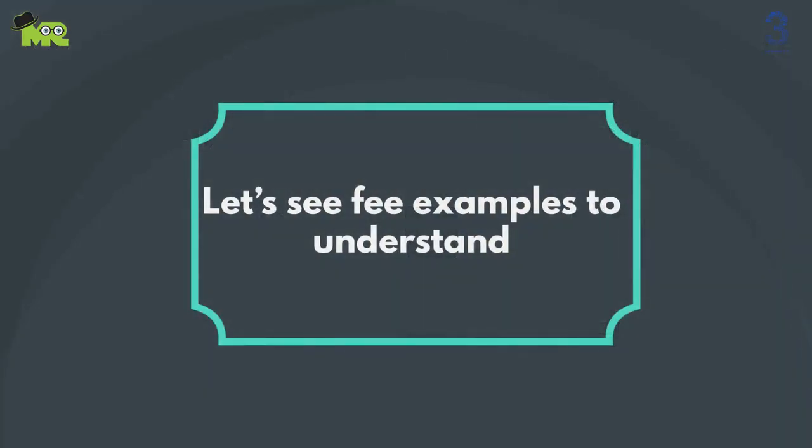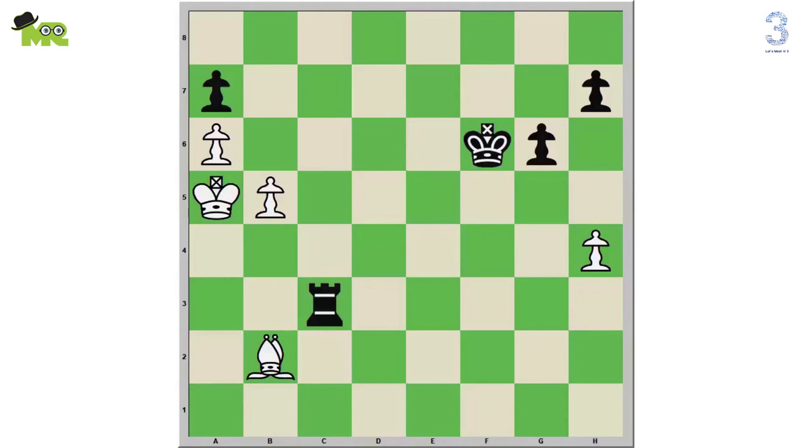Let's see a few examples to understand. In this first situation, the c3 black rook is pinned by the b2 white bishop. From this position, the c3 black rook cannot move anywhere, because if the black c3 rook moves, it will be check to the f6 black king by the b2 white bishop.